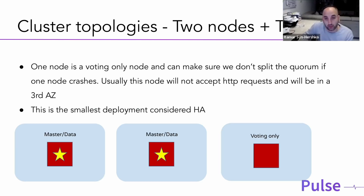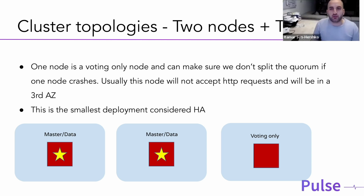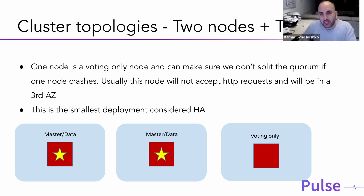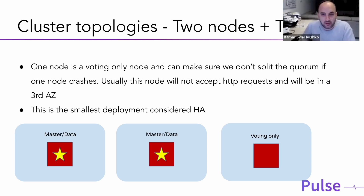That's why 99.9% of the time we split master nodes from data nodes. You also need more than two master nodes to avoid the split brain situation. You always need at least three nodes participating in voting. Voting is the process that happens every time a change needs to happen in the cluster or when you need to elect a new master node.